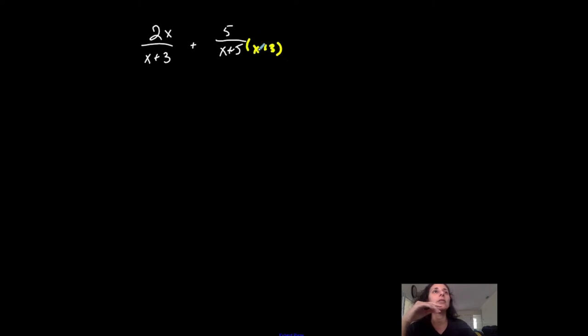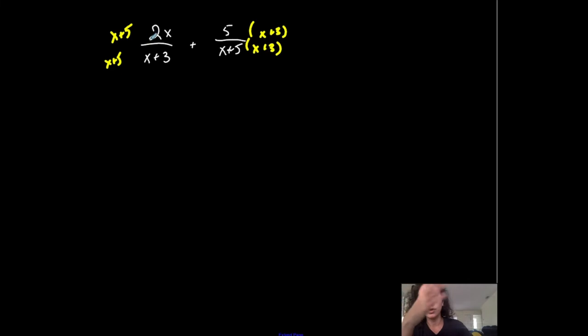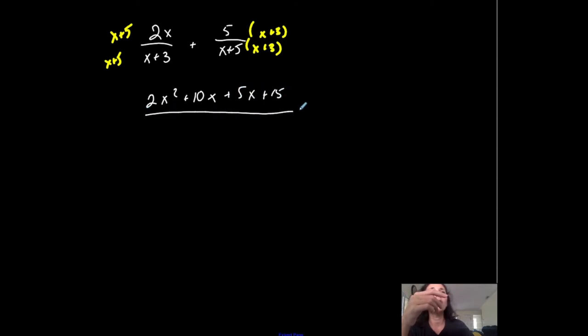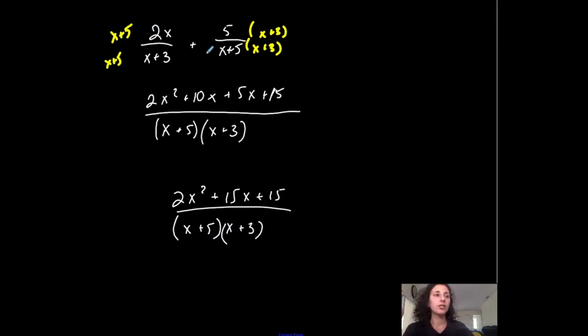Imagine I have 2x over x plus 3, plus 5 over x plus 5 — I'm adding two separate rational functions, or two fractions. In order to add them, I need a common denominator. So this one needs x plus 5, and this one needs x plus 3. Multiplying across the top gives 2x squared plus 10x, plus 5x plus 15, all over x plus 5 times x plus 3. Combining terms: 2x squared plus 15x plus 15, all over x plus 5 times x plus 3. So I took two fractions — rational expressions — and combined them into a single fraction.